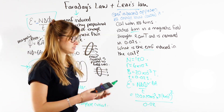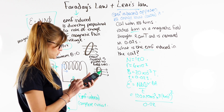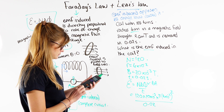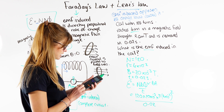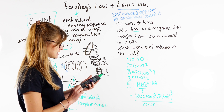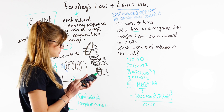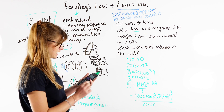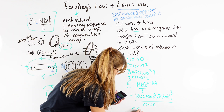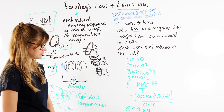On our calculators, we do pi r squared: 4 times 10 to the negative 2, all squared, multiplied by pi. We multiply by 20 times 10 to the negative 3, which is our magnetic flux density. We multiply by 120, the number of turns. And we divide by 0.02, our time, to get the rate of change of magnetic flux linkage. This comes out at 0.6 volts. Remember, EMF is measured in volts.